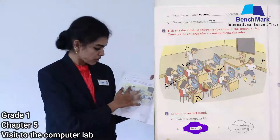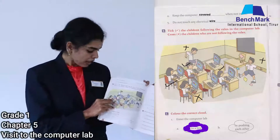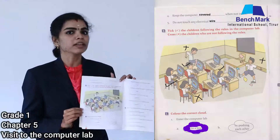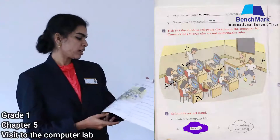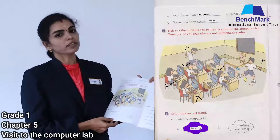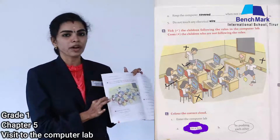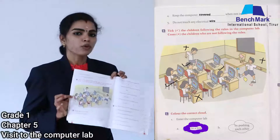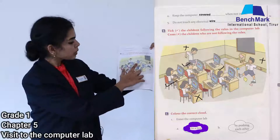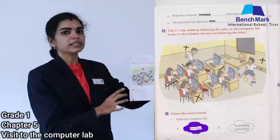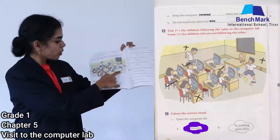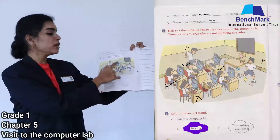Can you see this picture? It shows students working in a computer lab. You need to tick the children who are following the rules and cross the children who are not following the rules. Some children are sitting at their desk and working correctly — tick them. One student is running and playing inside the computer lab — cross them.